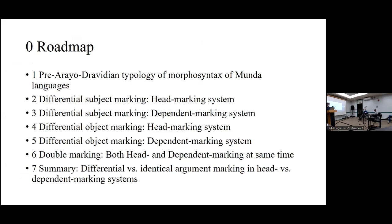So this is what the general outline of the talk is going to be. First, briefly introducing what I call the pre-Ario-Dravidian typology of the morpho-syntax of the Munda languages, prior to having been heavily influenced by contact with Dravidian and Indic languages in India. Then talking specifically about the two patterns we see: the head marking patterns of encoding things and the dependent marking patterns, and how they interact. We'll look at subject marking, head marking for subject, dependent marking for subject, then both of those for object marking, then languages that had independent marking simultaneously, and then a summary.